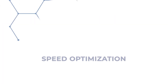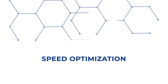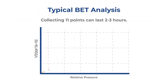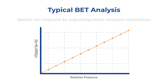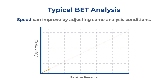Tip number seven: speed optimization. A typical BET analysis that collects 11 points can last about two to three hours. However, if throughput is more important than accuracy, the speed can be significantly improved by adjusting some analysis conditions.